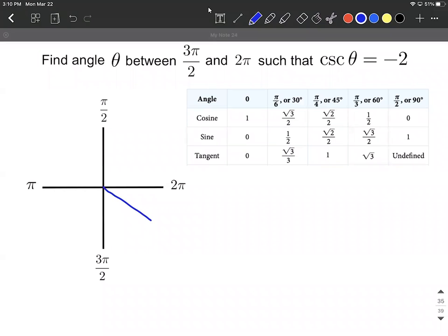And we need to find the angle that wraps around starting from the initial position at the x-axis all the way around here. It's going to give us cosecant of theta is equal to negative two.